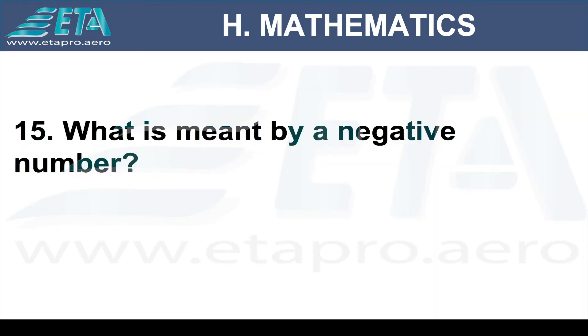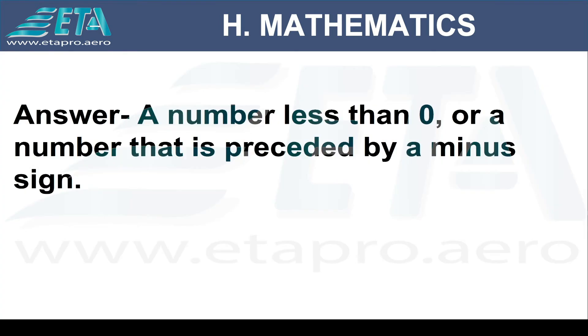What is meant by a negative number? A number less than zero, or a number that is preceded by a minus sign.